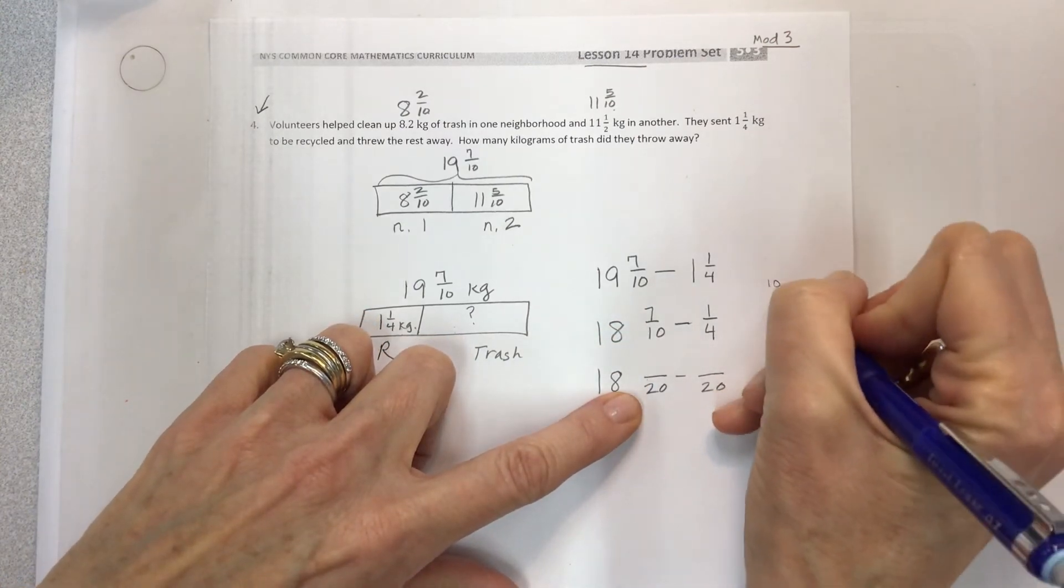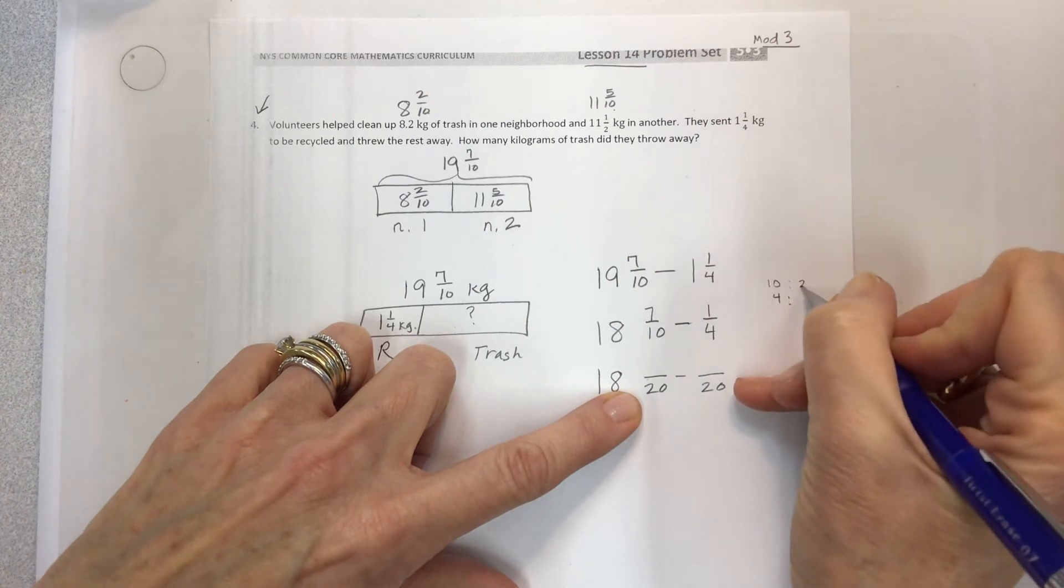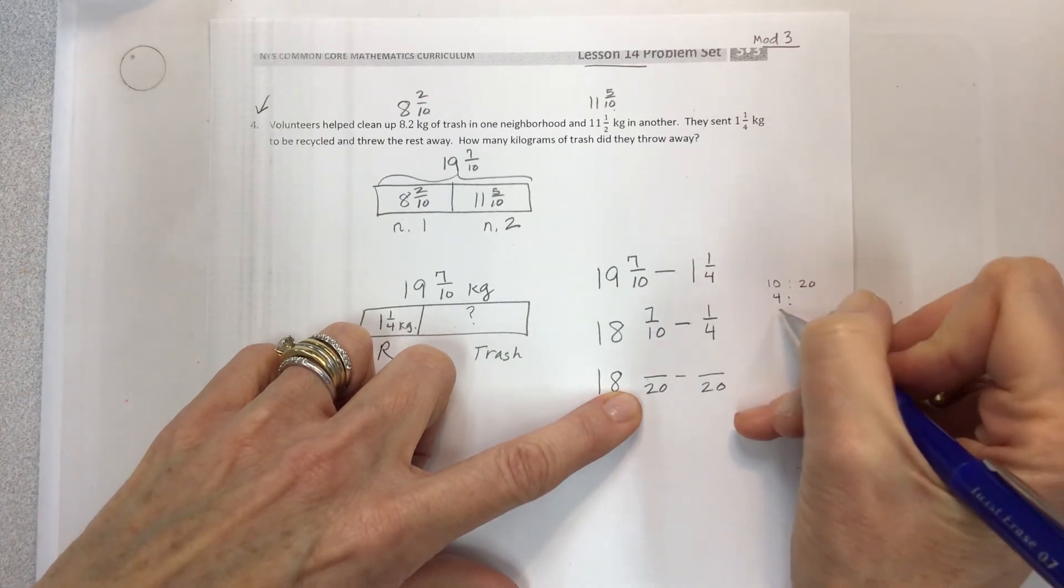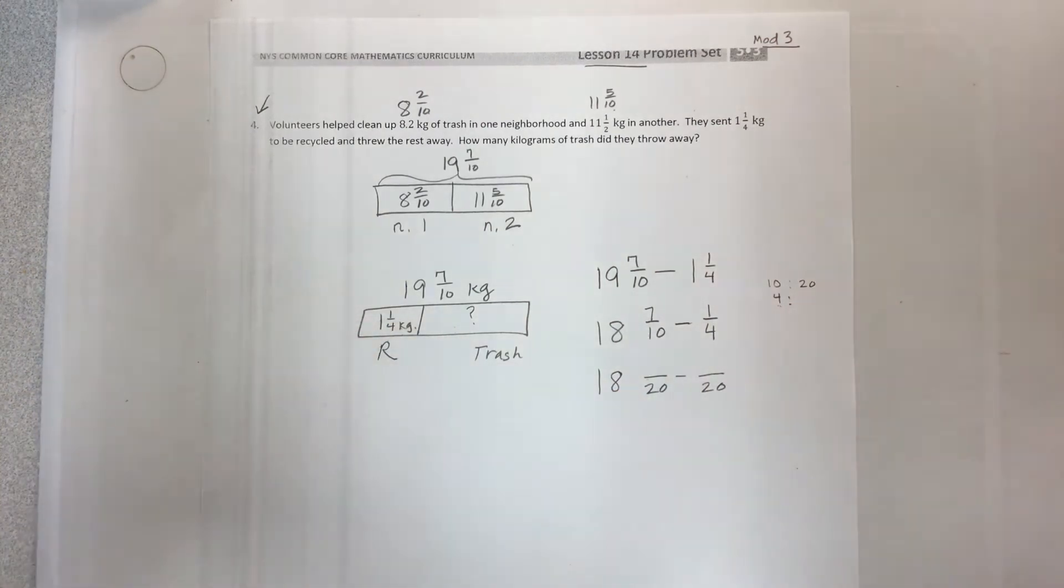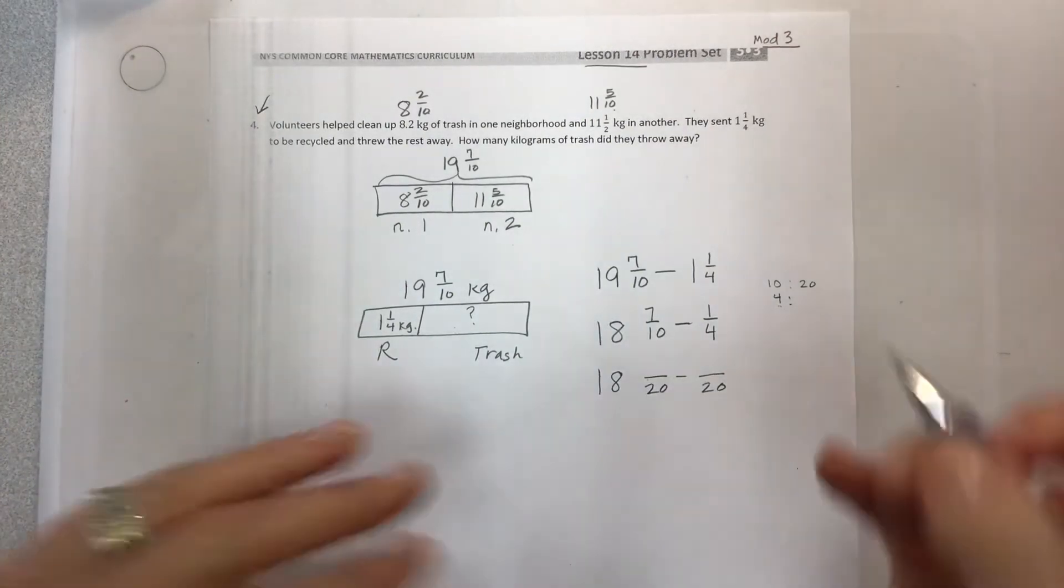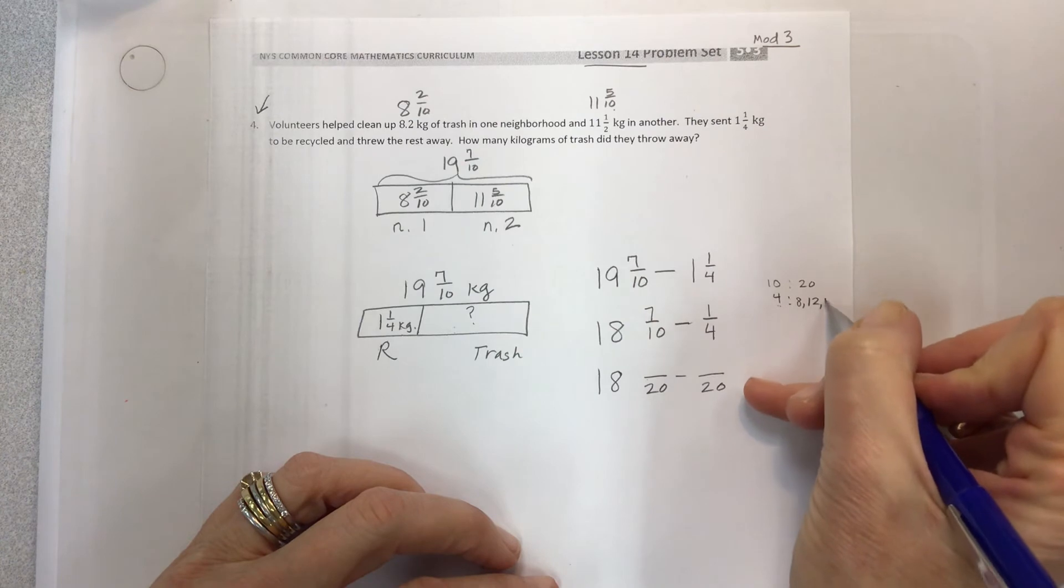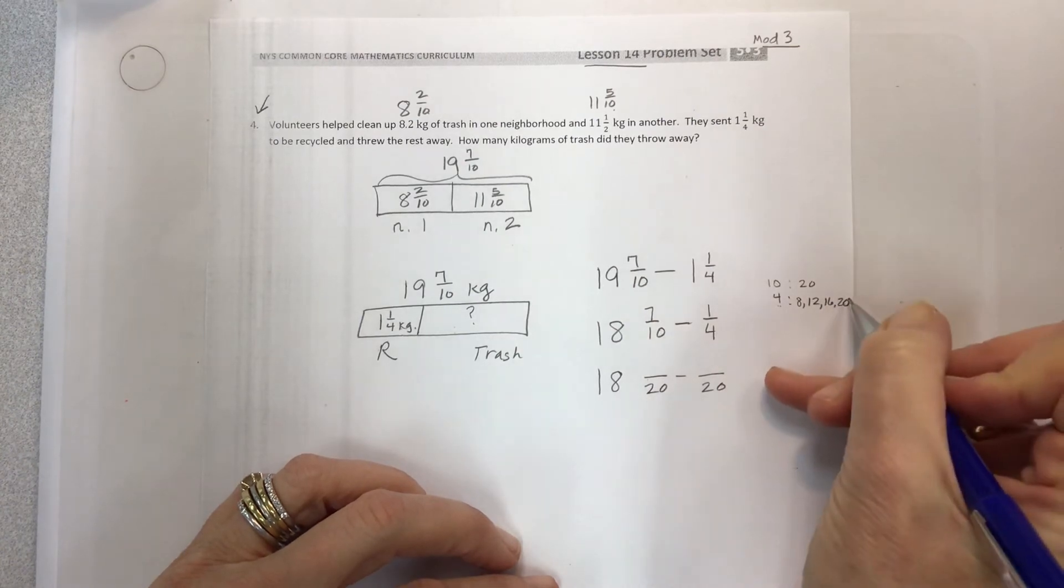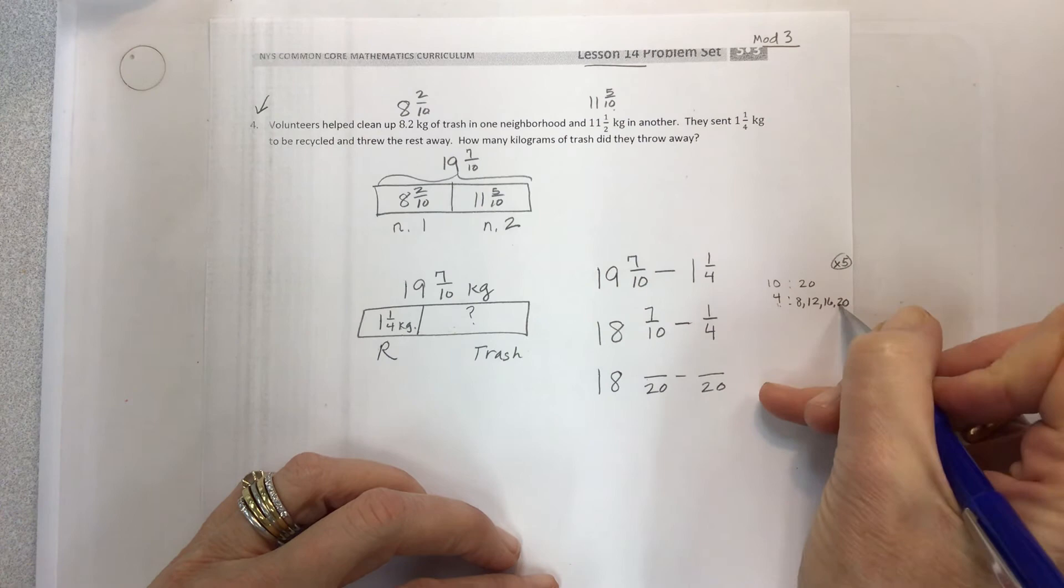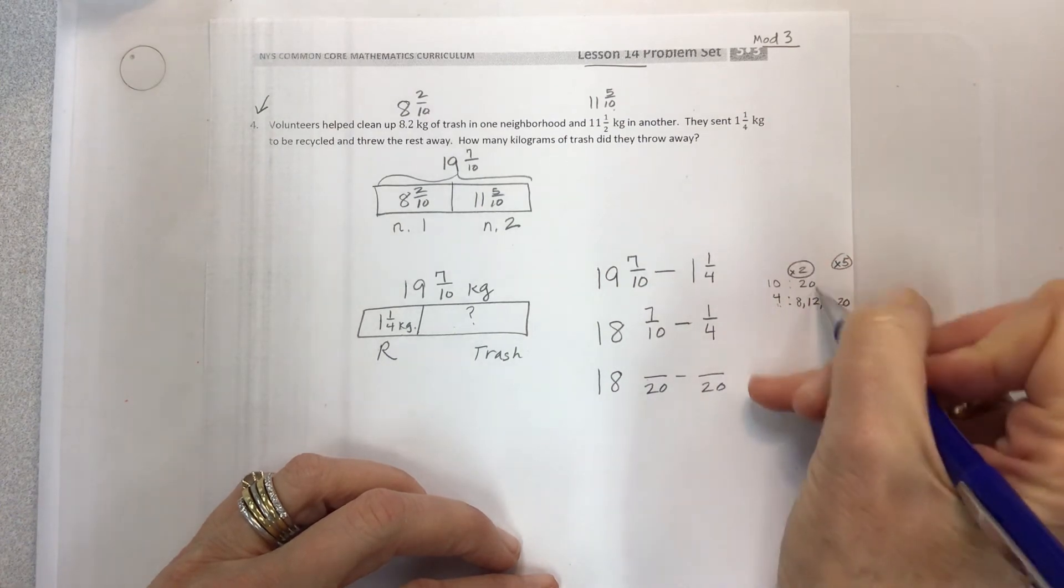Again, if you forgot how to do that, line them up, skip count, use the big number. When you see that this is a multiple of the other number, use the scale factor for that number. Scale factor for 4, if I have 4, 8, 12, 16, 20, the scale factor is going to be 5 for 4 and 2 for 10.